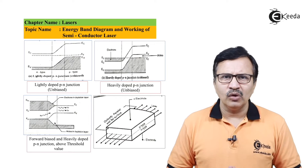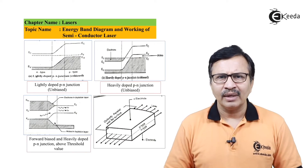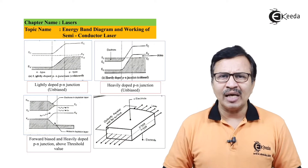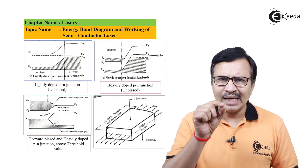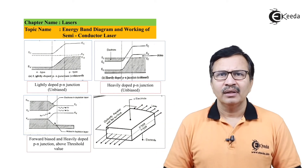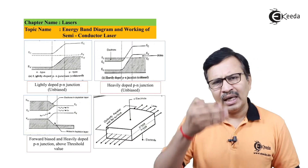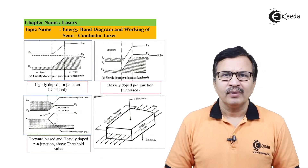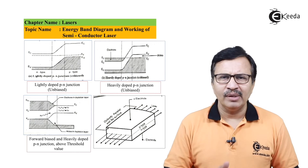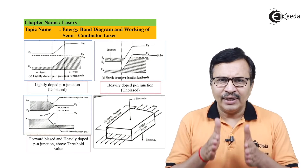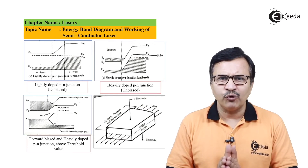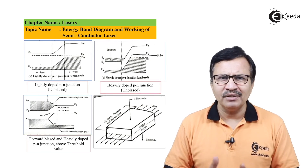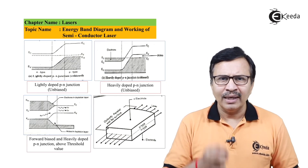Once population inversion has been reached, there are more electrons in the conduction band. One of the spontaneously emitted photons will excite these electrons, causing them to fall down to the valence band by recombining with holes. This results in the emission of coherent radiation, and due to the cavity formed in the depletion region, there is an avalanche multiplication of these radiations, producing a high-intensity laser output.